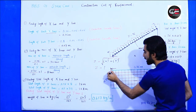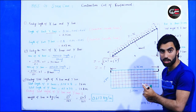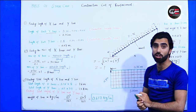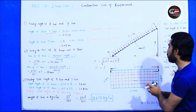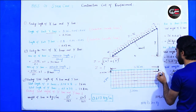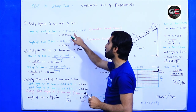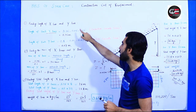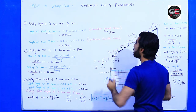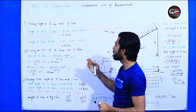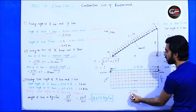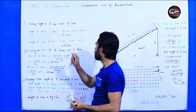We need to deduct the concrete cover from each side. The concrete cover is 0.05 meter on each side. So from 3.35 meters, we subtract 0.05 on one side and 0.05 on the other side — that is, deduct concrete cover from both sides. This gives us the length of the x-bar: 3.35 − 0.05 − 0.05 = 3.25 meters.